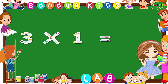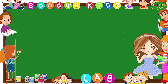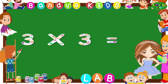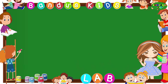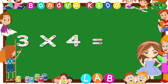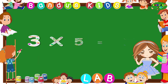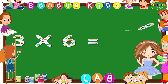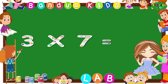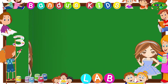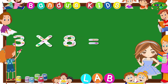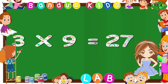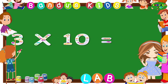Three ones are three. Three twos are six. Three threes are nine. Three fours are twelve. Three fives are fifteen. Three sixes are eighteen. Three sevens are twenty-one. Three eights are twenty-four. Three nines are twenty-seven.